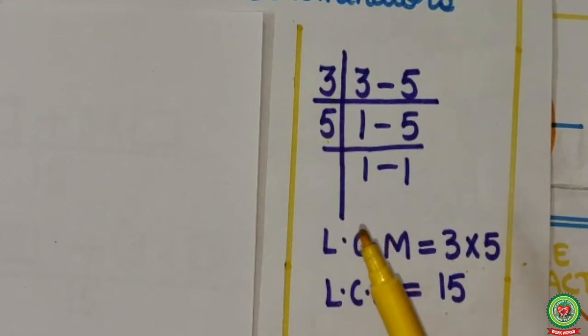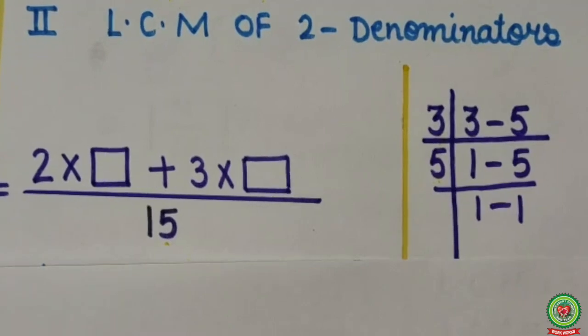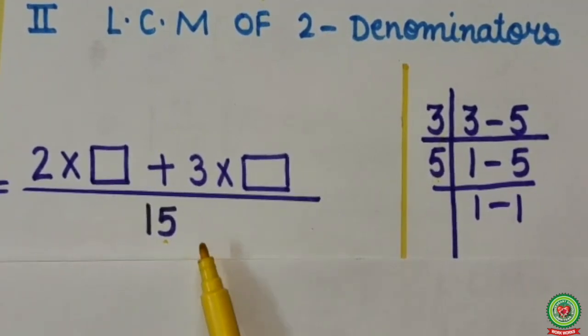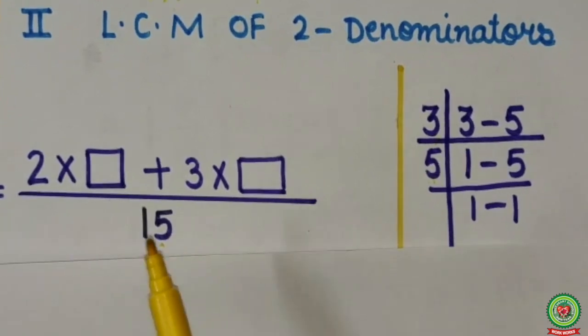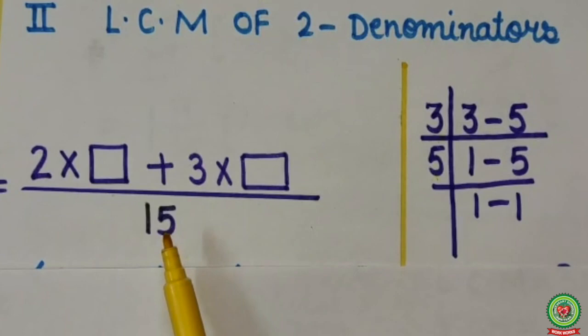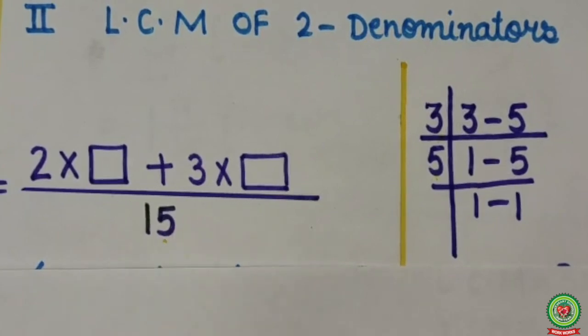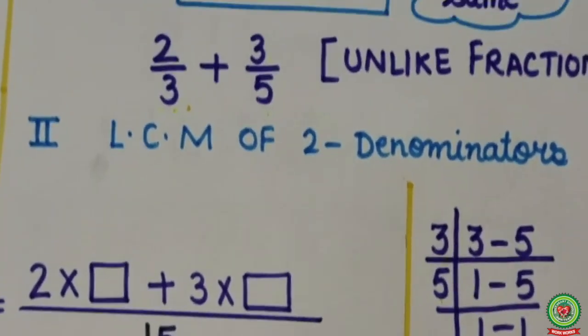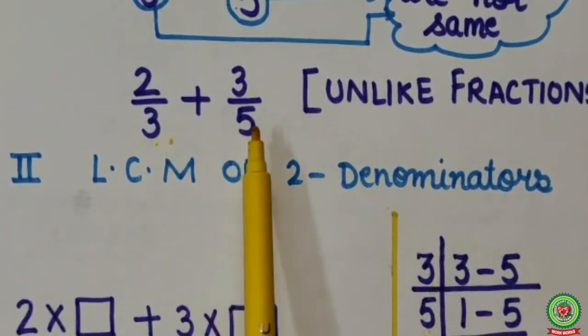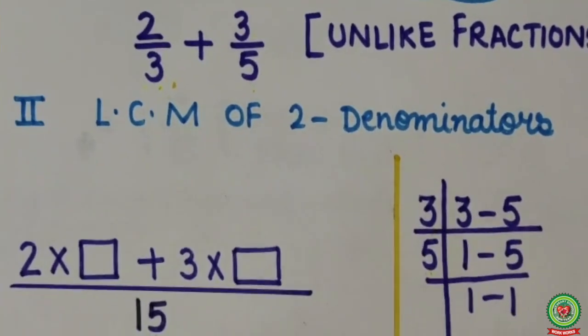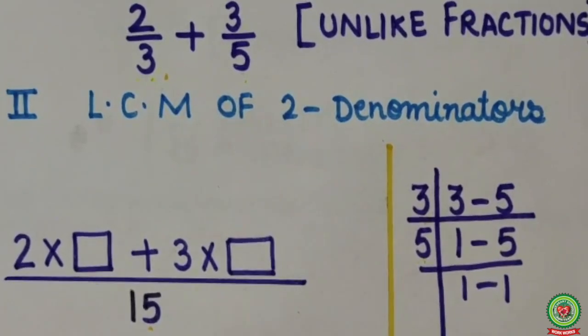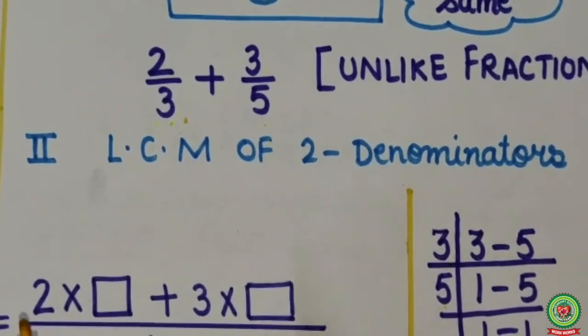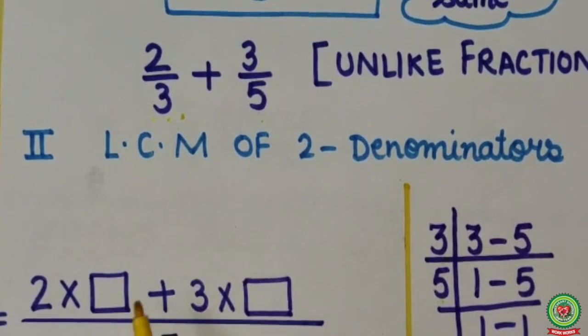LCM will come 3 into 5, that is 15. Now the next step is to make them like fractions. In like fractions, denominators should be common. Here I will use LCM as the denominator. At the place of denominator, I will write LCM as a common denominator. But now we have to change these fractions also with the equivalent denominator 15.